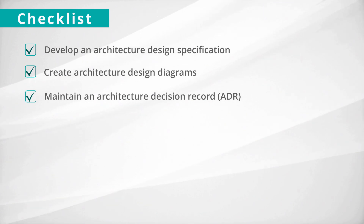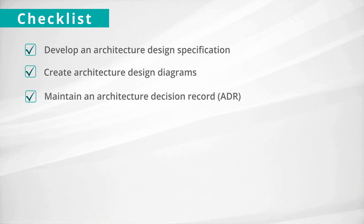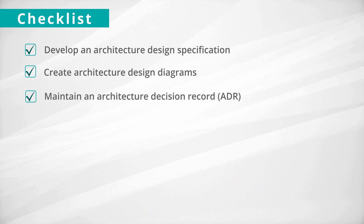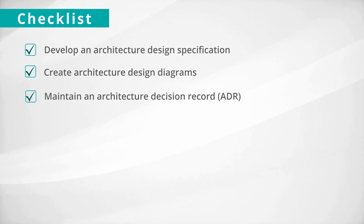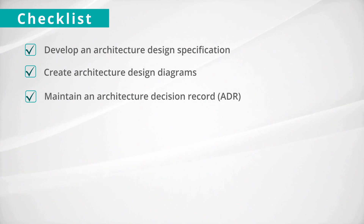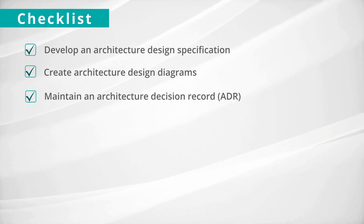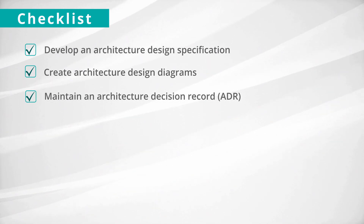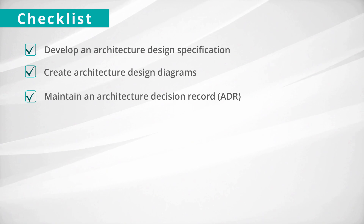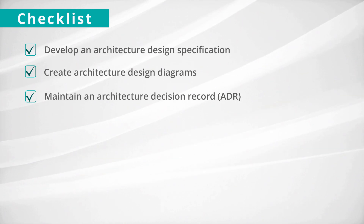Next is to maintain an architecture decision record, or ADR, that contains justifications for architectural decisions made during the design process. The ADR documents all key decisions including alternatives that were ruled out, and it incorporates requirements and constraints into the documented effects of a decision.